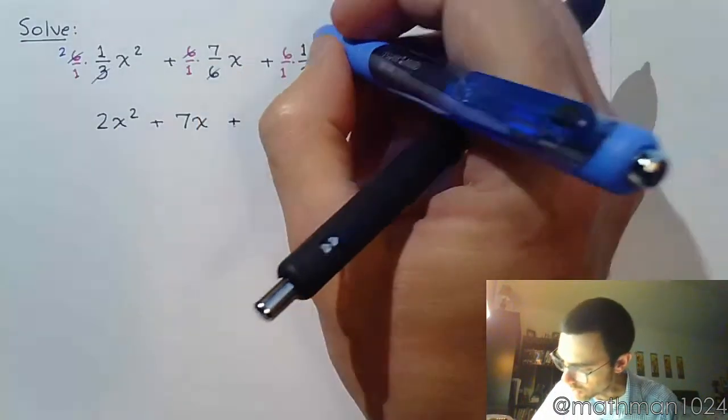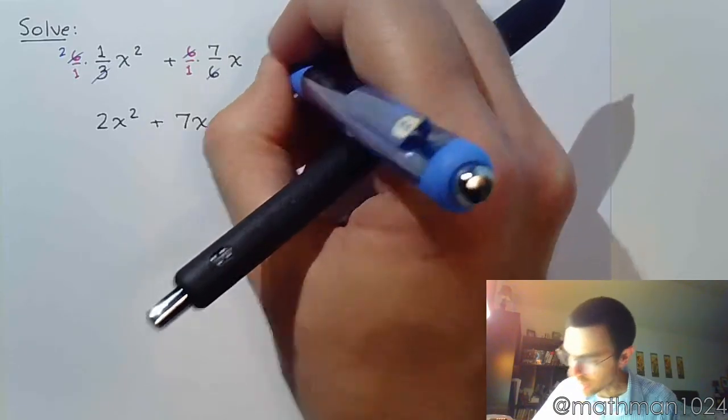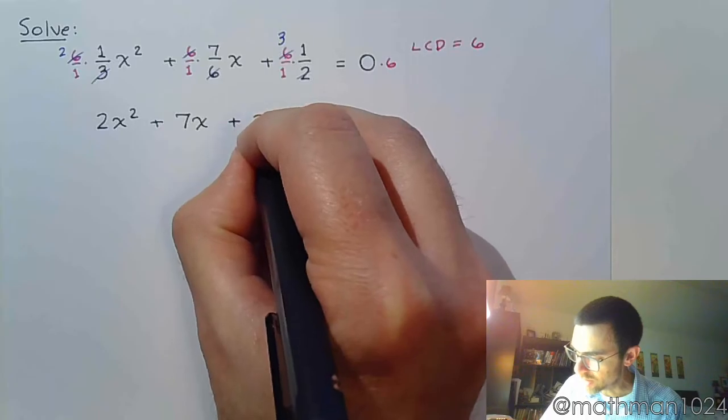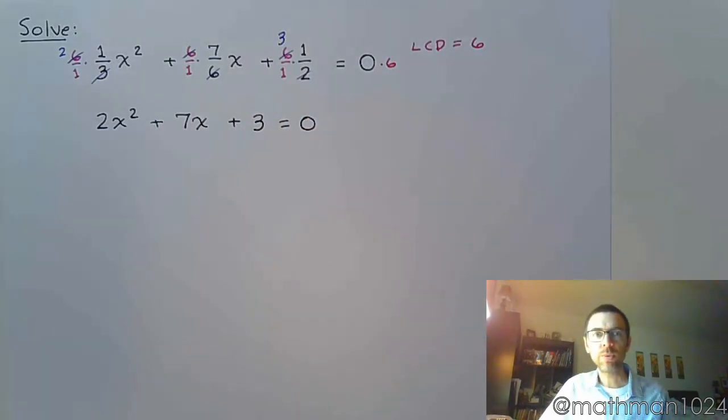And then over here, 2 goes into 6 three times, and I'm left with 3 times 1, which is 3. So there we go.